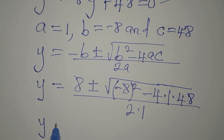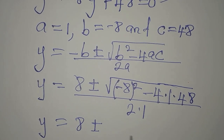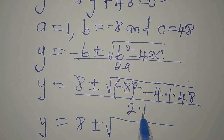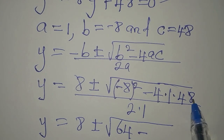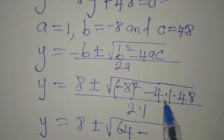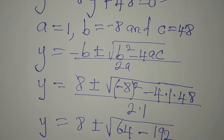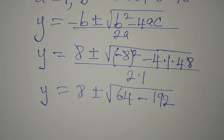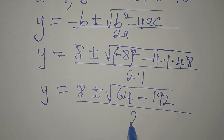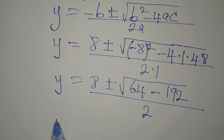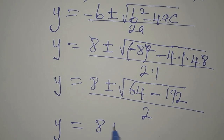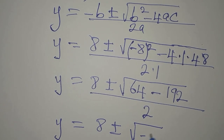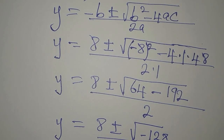Now our y will be 8 plus or minus the square root of: minus 8 squared gives 64, minus 4 times 48 — where 4 times 48 gives 192 — and we divide all of this by 2. So y equals 8 plus or minus the square root of (64 minus 192), divided by 2, which gives the square root of negative 128, divided by 2.